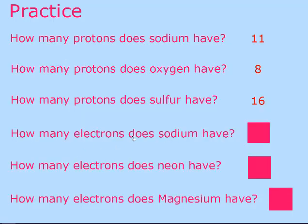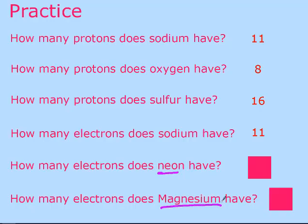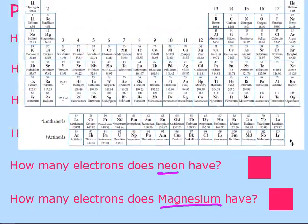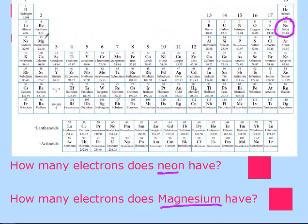If a question asks how many electrons an atom has, since atoms are neutral and no charge is specified, protons and electrons should be equal. Since sodium has 11 protons, it also has 11 electrons. For neon and magnesium: neon has 10 electrons and magnesium has 12 electrons.